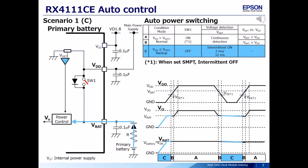Scenario 1, Case C: The main power supply is off, and VDD is less than VDET1. We call this backup mode. In this case, switch 1 is off.